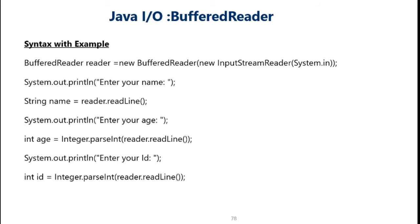Here is the example. First we have used System.in, this predefined stream object which is used to read the input. This is passed to InputStreamReader. This InputStreamReader wraps the byte stream into a character-oriented stream. So whenever we are reading values through System.in — which is the byte-oriented stream — those values are wrapped into a character-oriented stream using InputStreamReader. And then this InputStreamReader is passed to BufferReader.